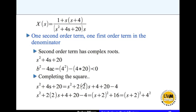So that you can write this as s plus 2 the whole squared. 20 minus 4 is 16 which is 4 squared. This term here when you complete the square you get s plus 2 the whole squared plus 4 squared.